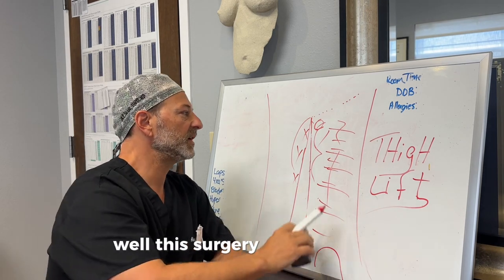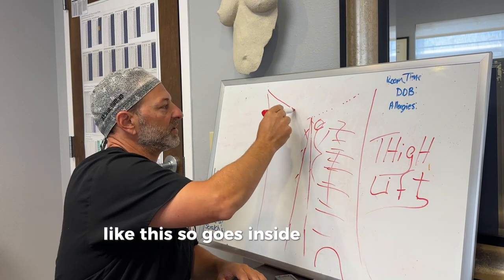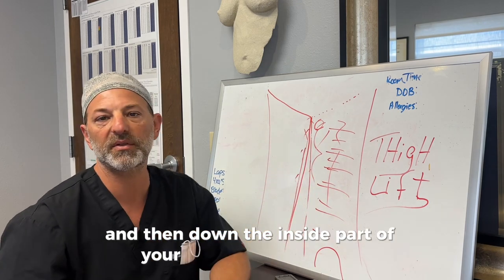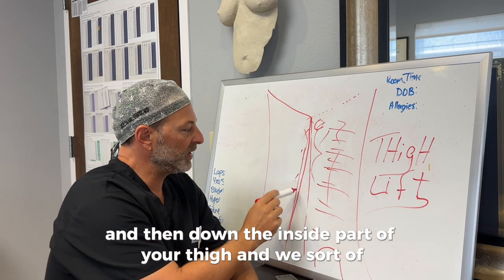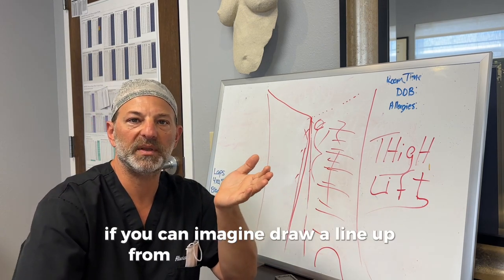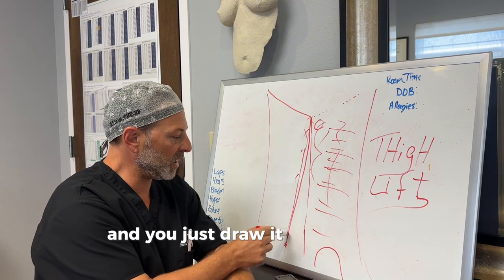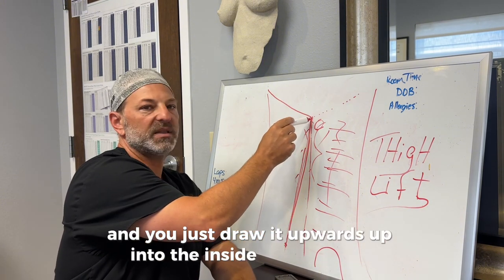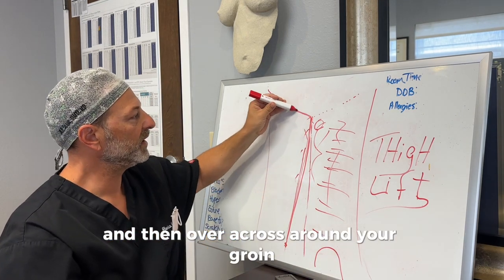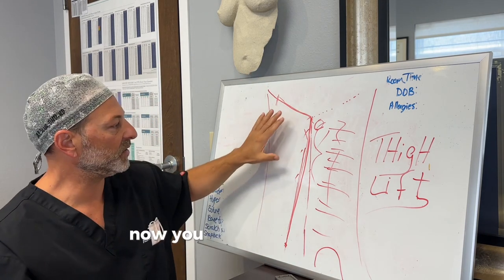Well, this surgery then would be like this. So it goes inside your thigh like that, and then down the inside part of your thigh. And we sort of put this incision - if you can imagine, draw a line up from the inside of your knee, and you just draw it upwards up into the inside of your groin, and then over across around your groin, and then up onto the anterior part of your thigh in your groin.